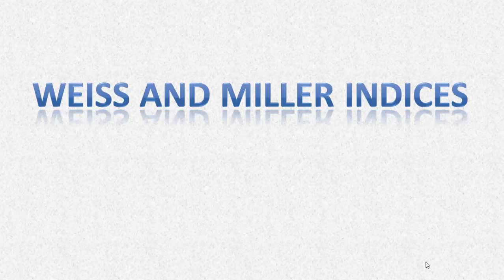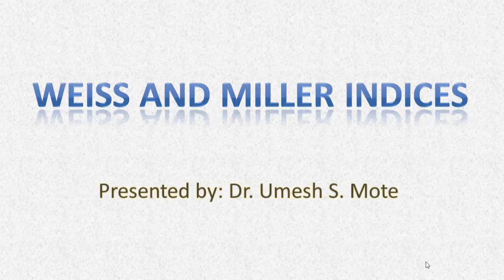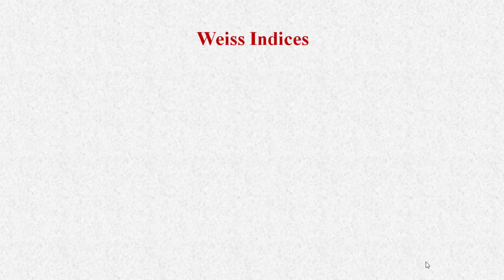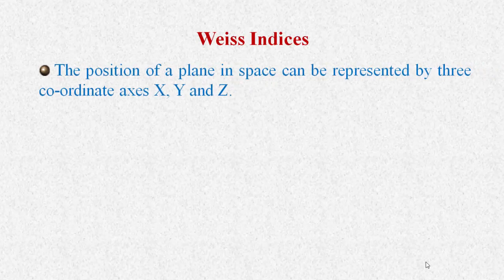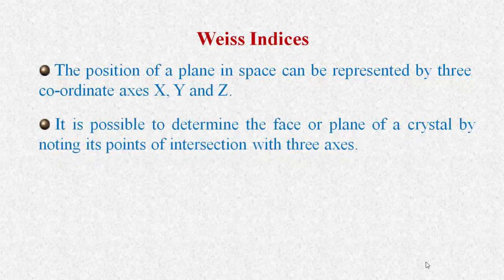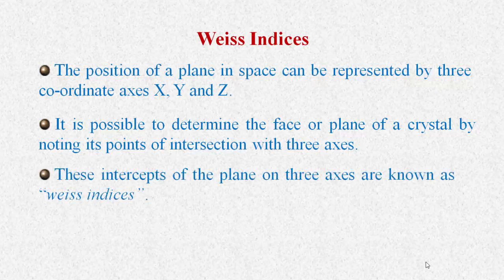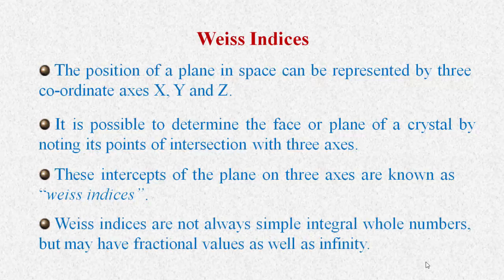Hello dear friends. Here I would like to discuss Weiss indices and Miller indices. First, Weiss indices: the plane of a crystal in space can be represented by three coordinate axes — X, Y, and Z. It is possible to determine the face or plane of a crystal by noting its point of intersection with these three axes. These intercepts of the plane on three axes are known as Weiss indices. Weiss indices are not always simple integral whole numbers but may have fractional values or infinity.